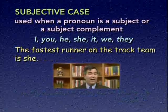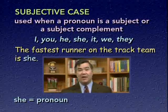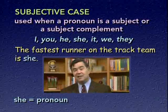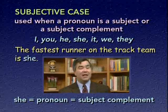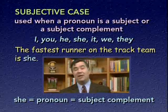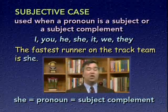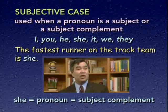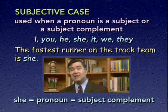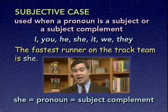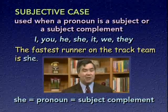Here's another example: 'The fastest runner on the track team is she.' The pronoun she is a subject complement following the verb of being is. It refers back to the subject runner — who is the fastest runner? She. Because the pronoun is playing the role of subject complement, it must be in the subjective case. Sentences using a pronoun as a subject complement are fairly rare in English, but it's good to know this rule.